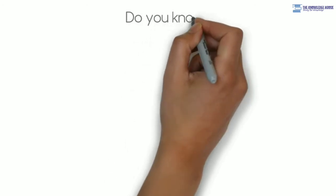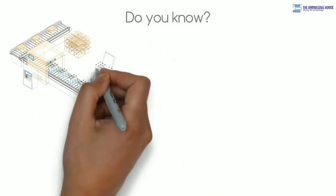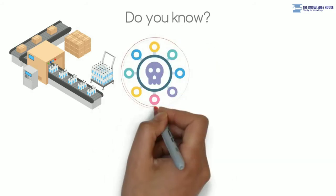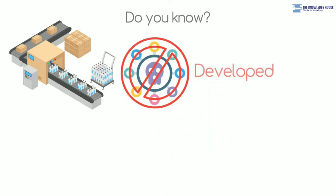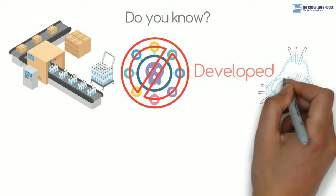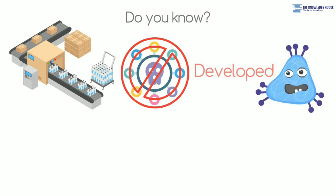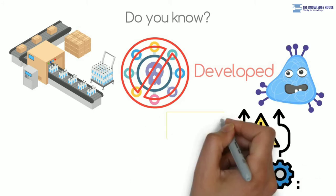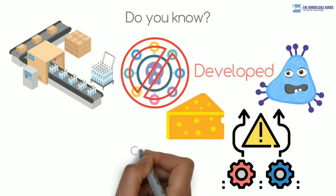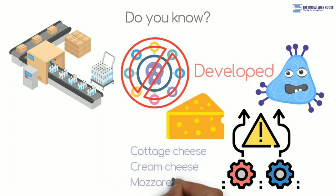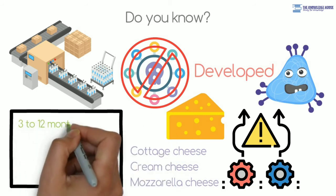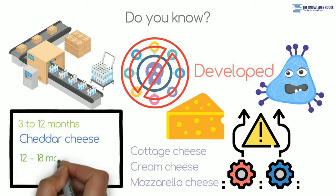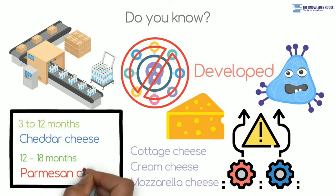Do you know? During industrial production of milk products, strict cleanliness and sterilization is essential as bacteria can be attacked by viruses. Hence, virus-resistant varieties of bacteria are developed. Recently, use of mutant varieties of bacteria has been increased. Artificially, some strains are developed that will help to avoid unnecessary steps or materials. Freshly prepared cheese is always soft, that is cottage cheese, cream cheese, mozzarella cheese. On storing for 3 to 12 months, semi-hard cheddar cheese is formed, whereas after ripening for 12 to 18 months, very hard cheese called parmesan cheese is formed.